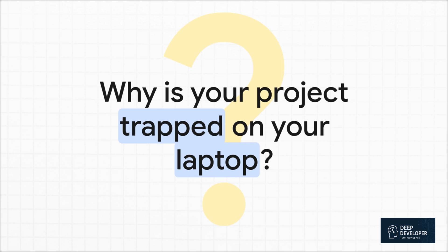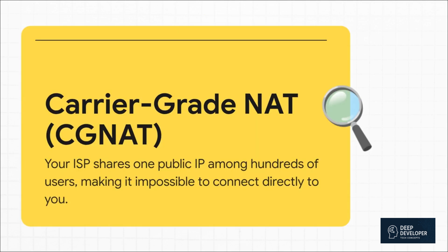So what's going on? The villain of our story is this thing called Carrier-Grade NAT, or CGNAT for short. It's basically how most internet service providers save money. Instead of giving every house its own public IPv4 address, they lump hundreds of customers — including you — behind a single one. This makes it literally impossible for someone on the outside to connect directly to your computer. Think of it like this: your whole neighborhood has one mailing address, but no one has an apartment number. Mail can get to the building, but not to you.